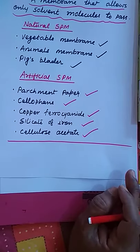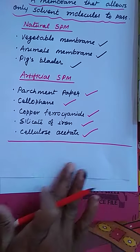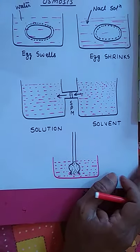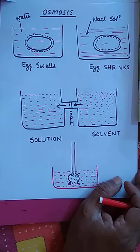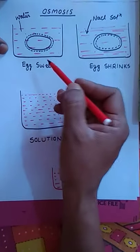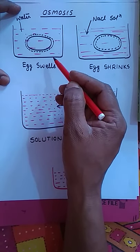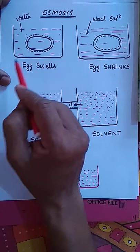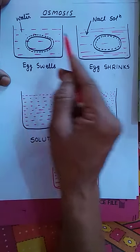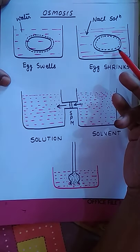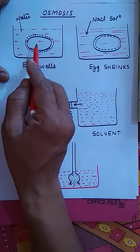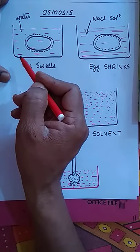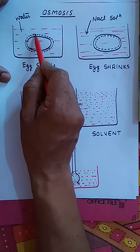You can observe osmosis with an egg example. The outer shell is removed by putting the egg in HCl, leaving a thin membrane around the egg. One egg is dipped in water and another in NaCl solution. In the first case, the egg in water swells — its size expands. This is due to osmosis, because the membrane acts as a semi-permeable membrane.